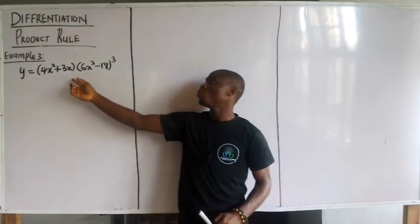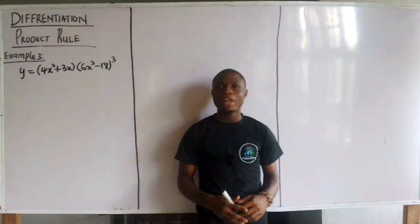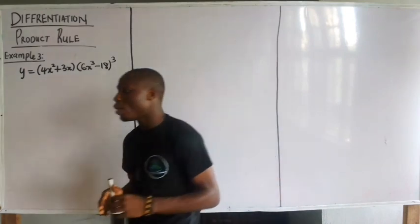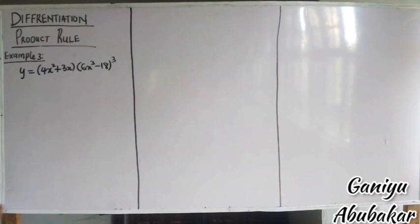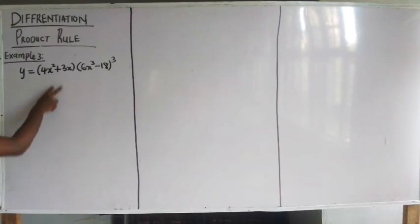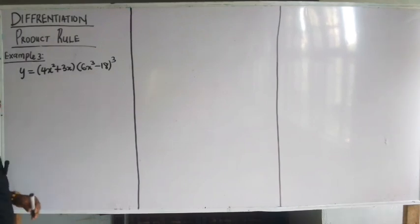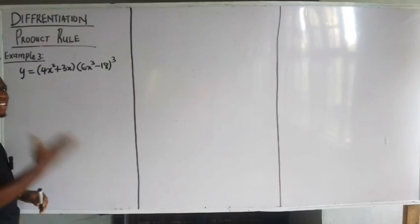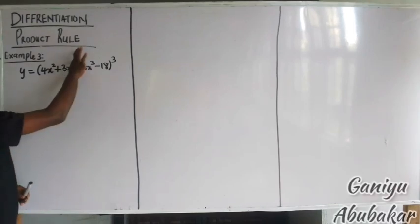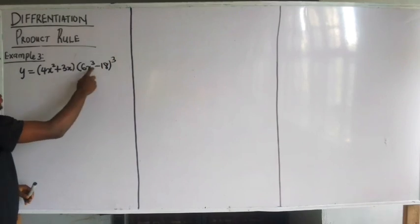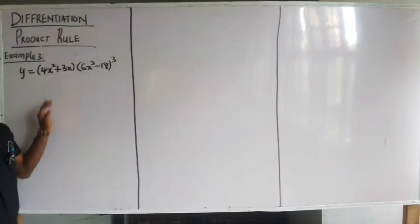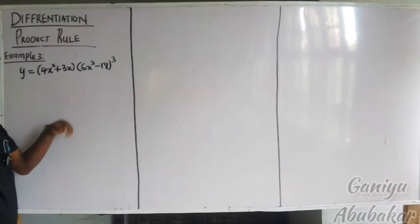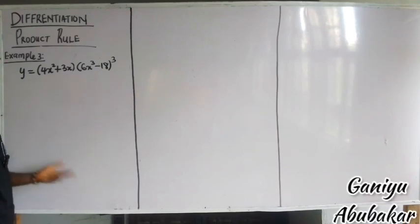First things first. I'm having two terms multiplying each other. Hence, I will apply the concept of the Product Rule. Now, observe again. Look at this term — it's giving me the idea of chain rule. This is a chain rule. So this question, I'm applying both the Product Rule and chain rule concepts here.